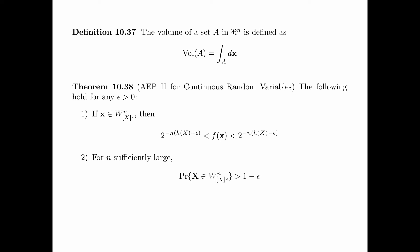Second, for n sufficiently large, the probability that the random sequence x is epsilon typical is greater than 1 minus epsilon. And third, for n sufficiently large, the volume of the typical set is approximately equal to 2 to the power n times the differential entropy of x.